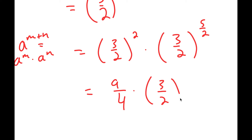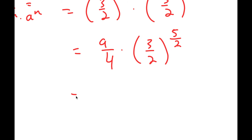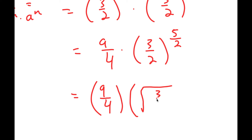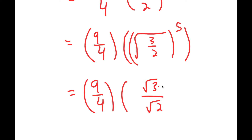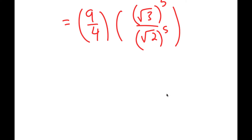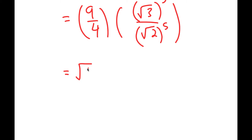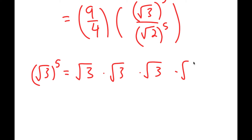Now, 3 over 2 squared is 9 over 4. So I have 9 over 4 times 3 over 2 to the power of 5 over 2. And 3 over 2 to the power of 5 over 2 is the same thing as the square root of 3 over 2, to the power of 5. This turns into 9 over 4 times the square root of 3 to the power of 5 over the square root of 2 to the power of 5.